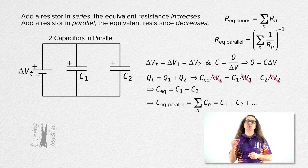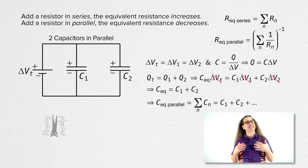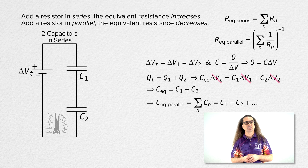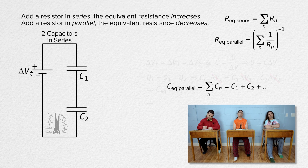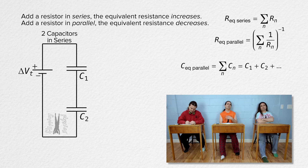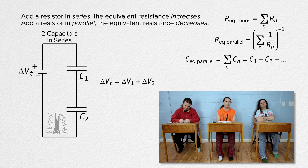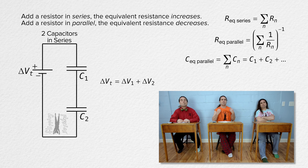Let's move on to two capacitors in series. We know the electric potential difference equation is the same as for two resistors in series: terminal voltage equals voltage across capacitor 1 plus voltage across capacitor 2.